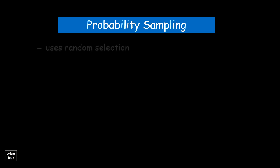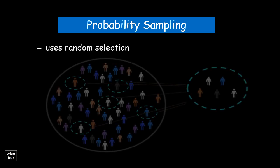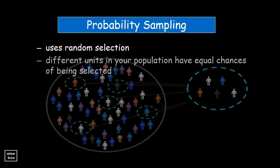Probability sampling is a method of sampling that uses a random selection so that all units or cases in the population have an equal probability of being chosen. In order to have a random selection method, you must set up some process or procedure that assures that the different units in your population have equal chances of being selected.